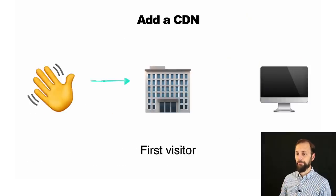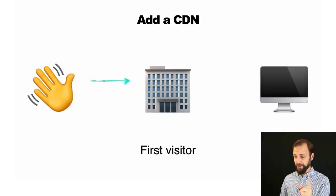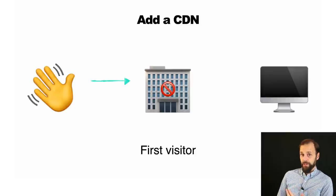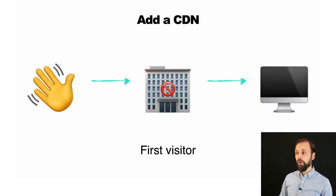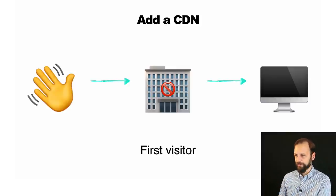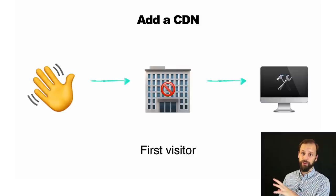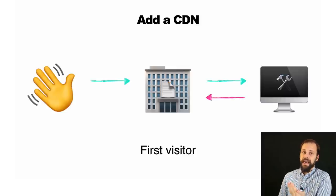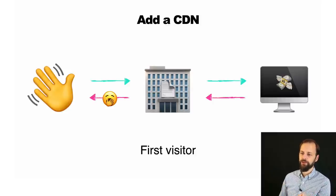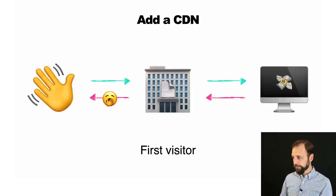Now let's throw a CDN into the middle. The first visitor makes a request to the CDN. The CDN doesn't have that document yet, so it goes to your origin server — your actual web server. The origin server builds the page and sends it to the CDN. The CDN caches the page and sends it to the user. We still get a yawner because we had to wait for the whole cycle — this is just the first person ever to visit this URL. It costs money to build that page.